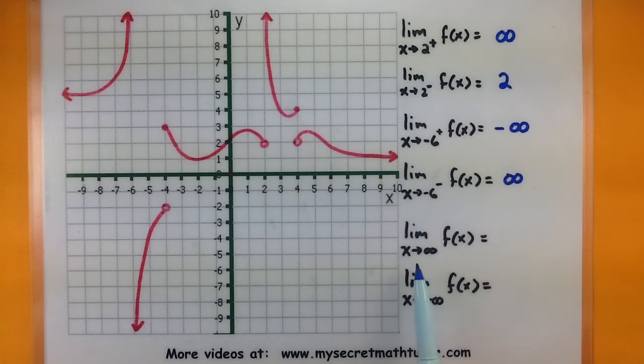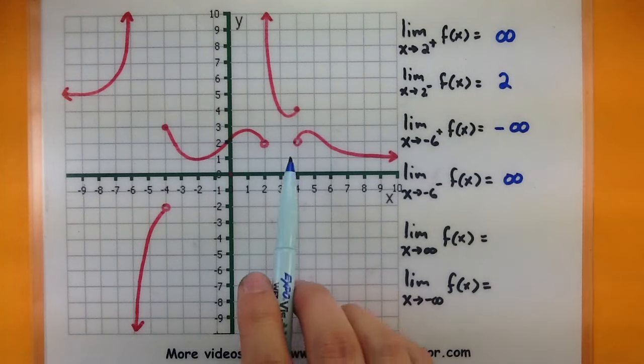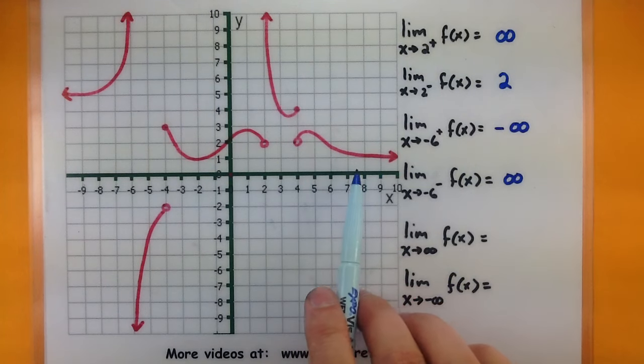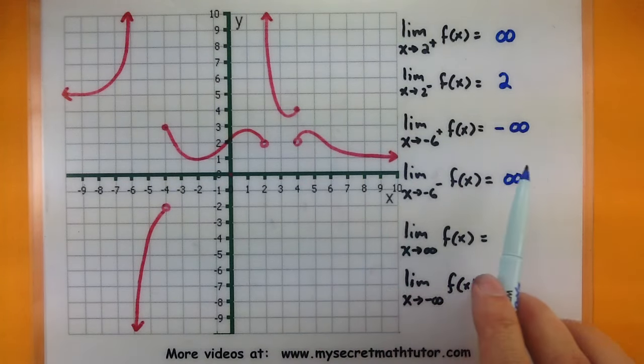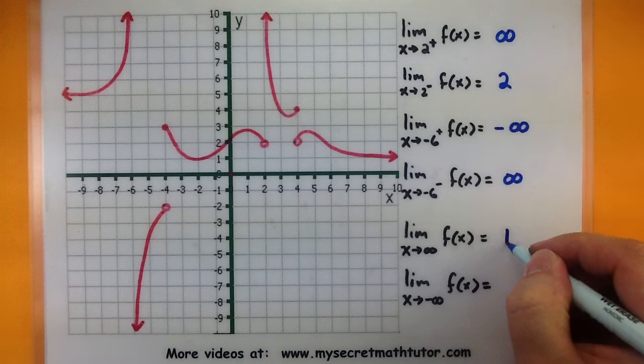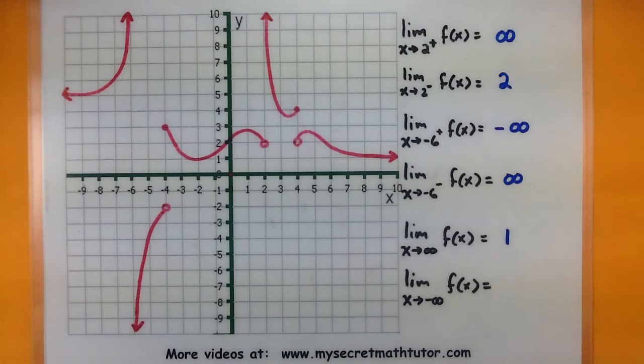So what is happening as x goes towards infinity? Our function does a lot of crazy things, but as we get down here and imagine continuing on into infinity, it looks like it just wants to be the value of 1. So we'd say that as we're approaching infinity, our function wants to be 1.